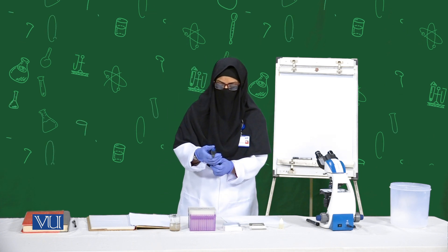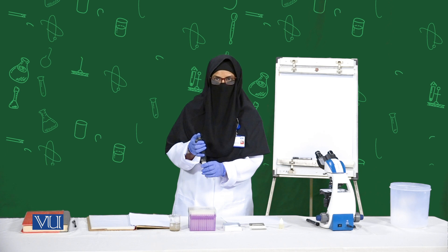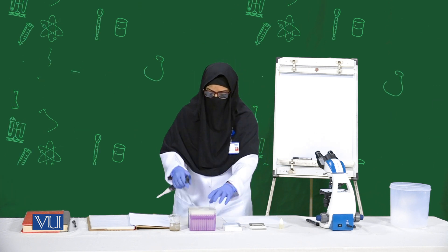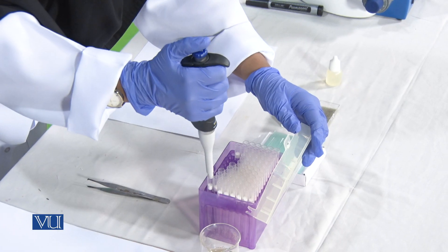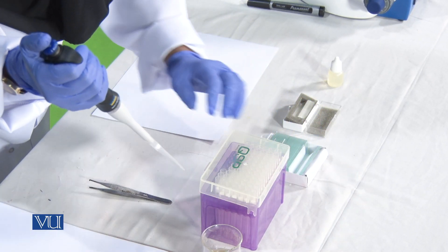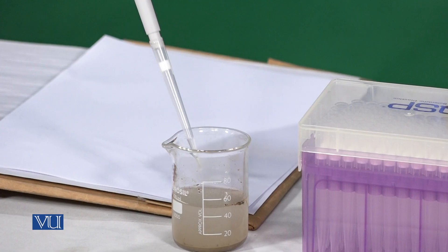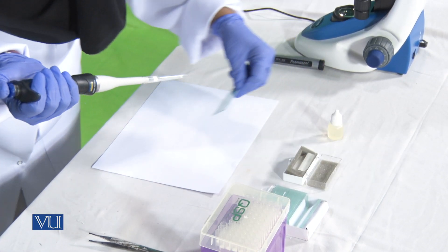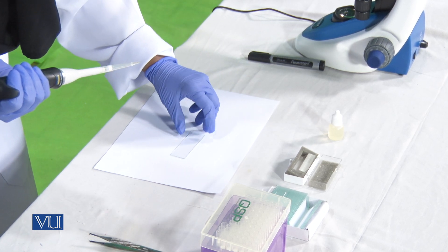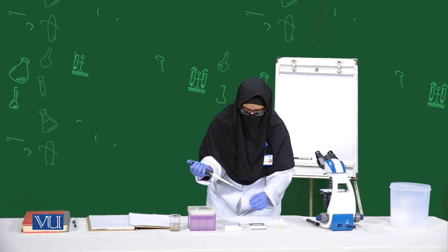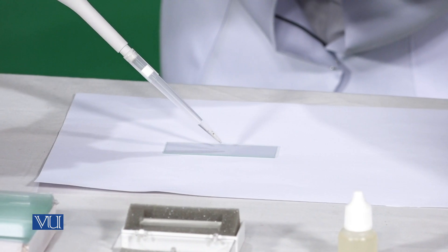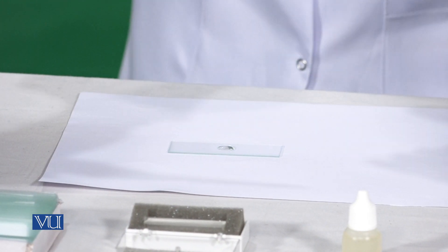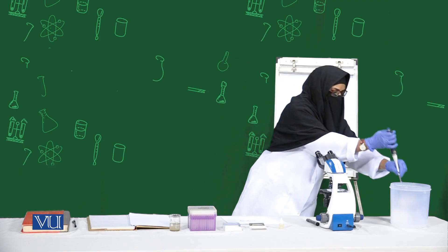I have set the pipette for proper measurement at 100 microliters and I will take 100 microliters of the pond water on a clear slide, put the water, and discard the tip.